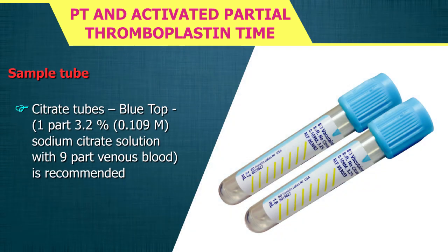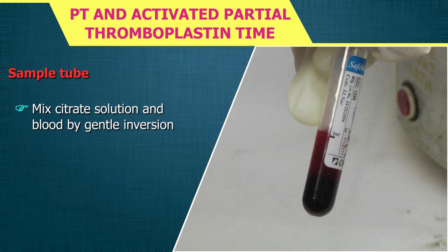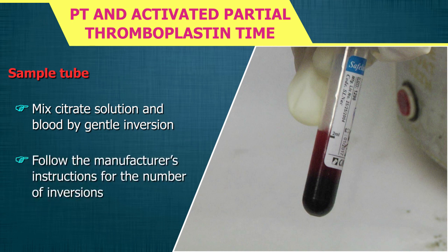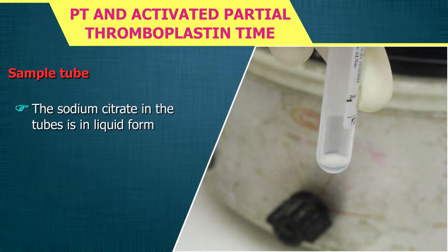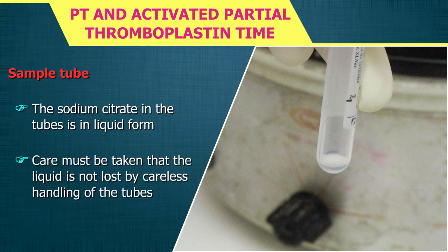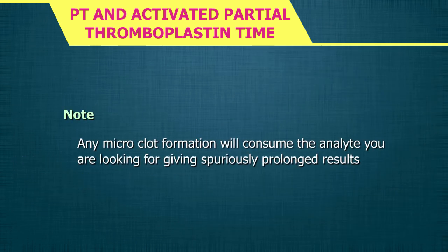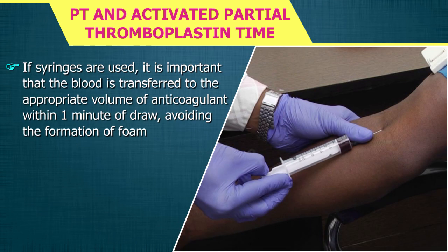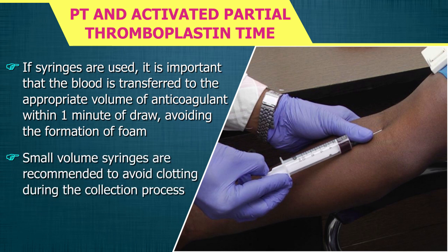Use citrate tubes (blue top): 1 part 3.2% sodium citrate solution with 9 parts venous blood is recommended. Mix the citrate solution and blood by gentle inversion, following the manufacturer's instructions for the number of inversions. The sodium citrate is in liquid form, so care must be taken that the liquid is not lost by careless handling. Note: any micro-clot formation will consume the analyte, giving spuriously prolonged results. If syringes are used, transfer blood to the appropriate volume of anticoagulant within 1 minute of draw, avoiding foam formation. Small volume syringes are recommended.